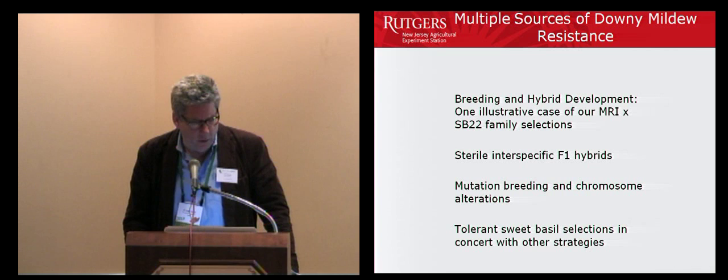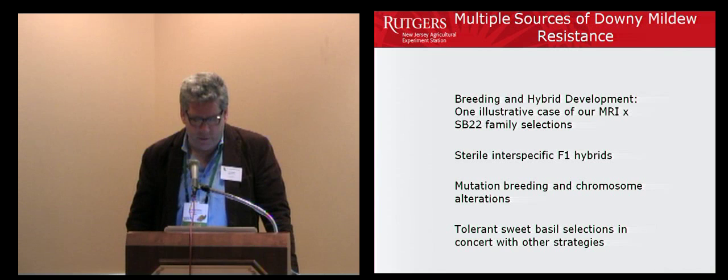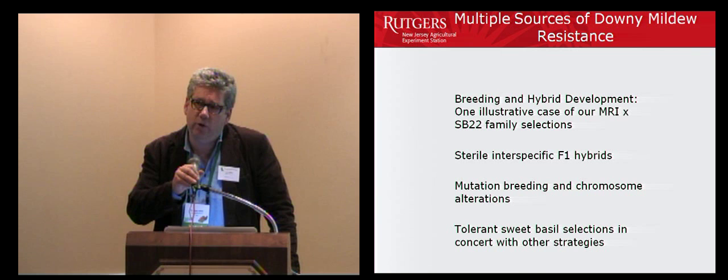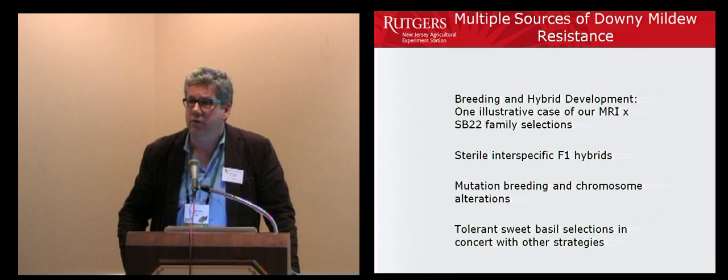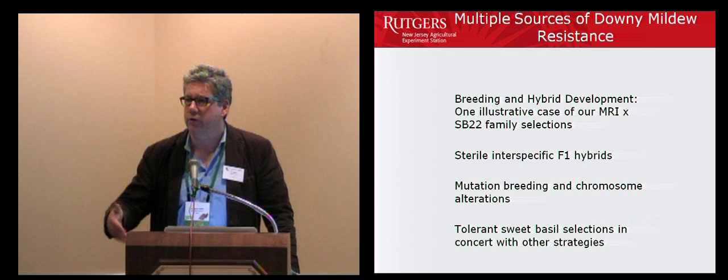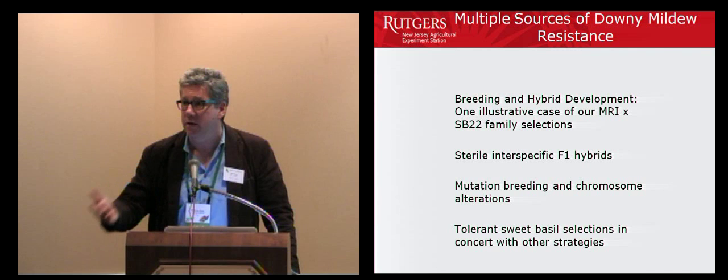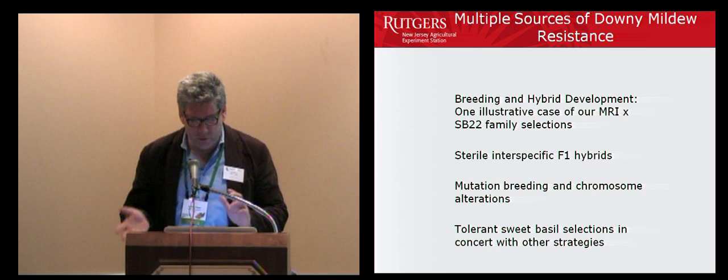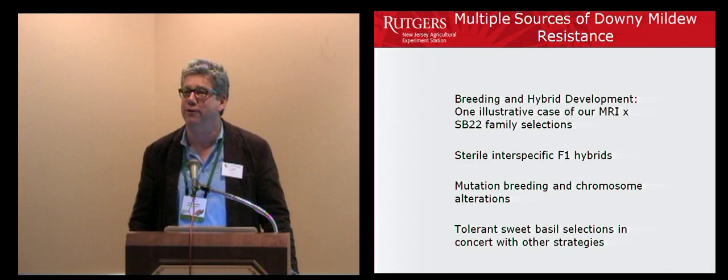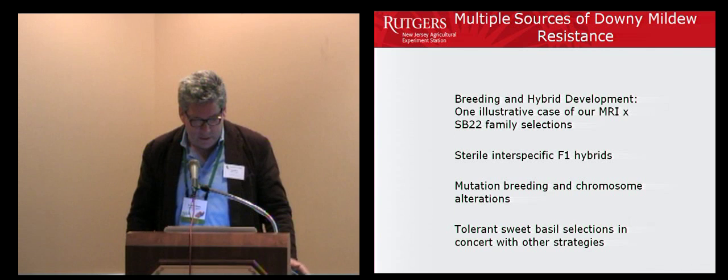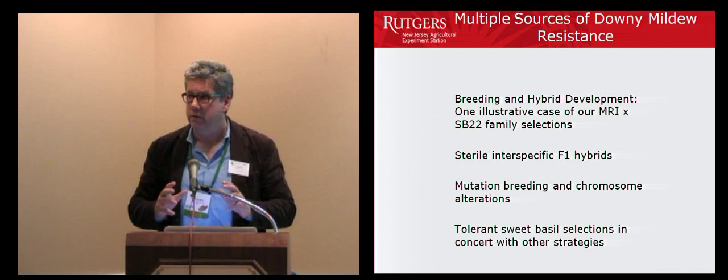We're also looking at tolerance and sweet basil selections in concert with other strategies. The concept of tolerance or intermediate resistance is very important to use in concert with other tools where we don't have absolute resistance. Maybe we'll eventually have absolute resistance to one type of fusarium, but in a different area with a different isolate, it could break down. We prefer the term tolerance — weakly, mildly, or intensely tolerant depending on the environment — because it confers some delay of the onset of visual symptoms.